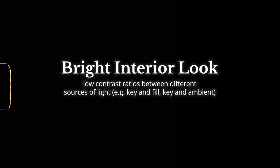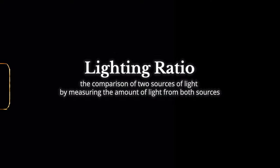The bright interior look is usually defined by having a low contrast ratio between different sources of light. For example, the key and the fill side is usually about a stop or maybe a stop and a half under. The key and the ambient lighting is also relatively close, maybe a stop or so under. This means the amount of light between the key and fill light will be very similar, with the fill just being a little bit darker than the key. Whenever I'm trying to copy or take inspiration from someone else's work, I always look at the lighting ratios — the comparison between two sources of light. I'll link a video going over what lighting ratios are.